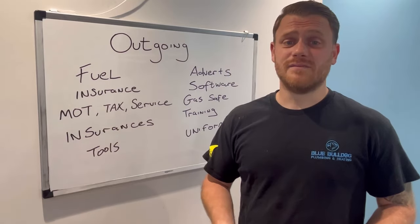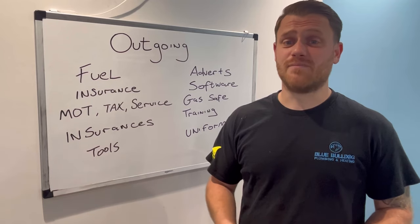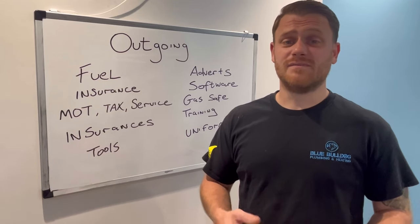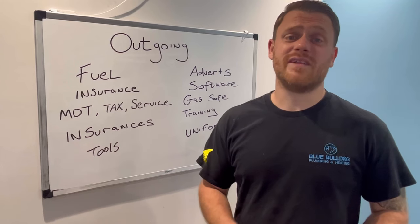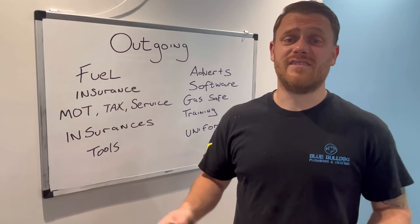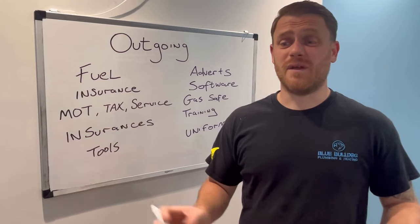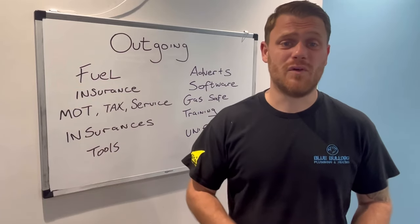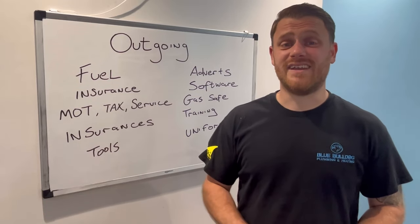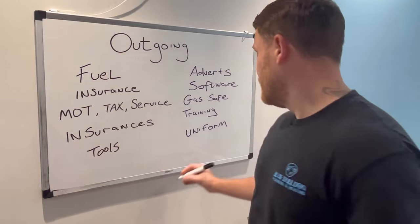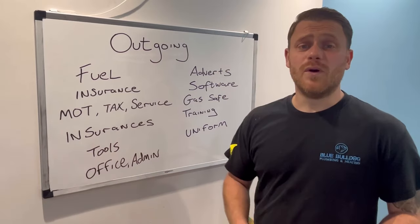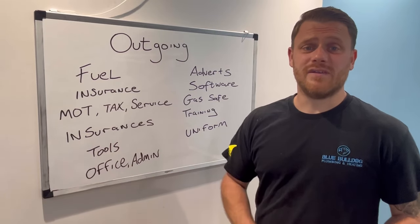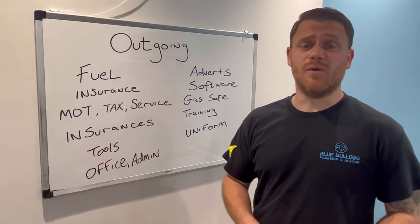Office and admin — paper for your printer, the printer itself, your computer, and anything else you use in the office. It might not be a huge budget since we're mainly out on the road, but it's still costing money, so include it.